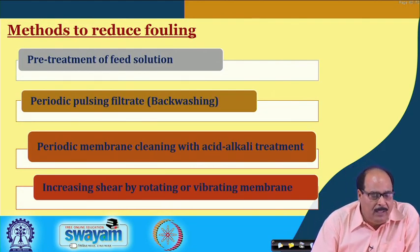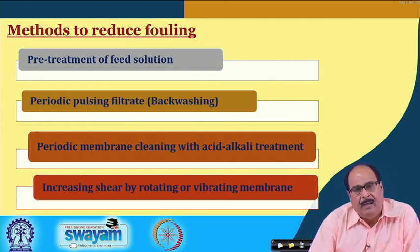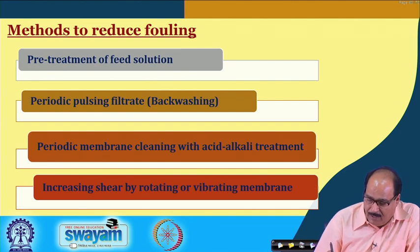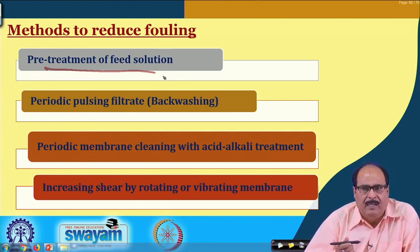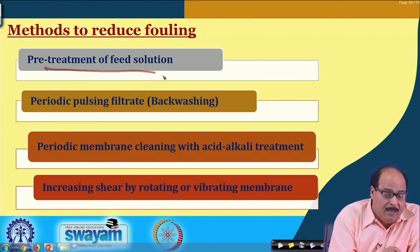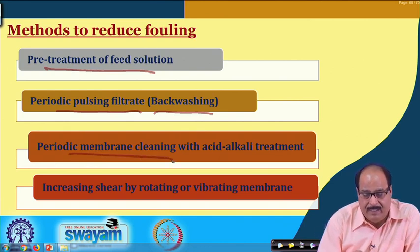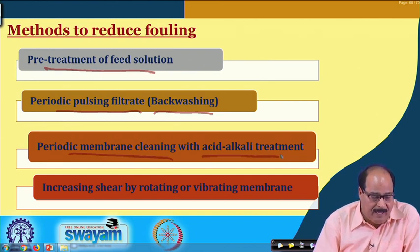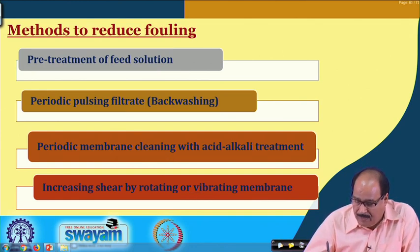Methods to reduce fouling: pretreatment of the feed solution is one important approach — suspended particles can be pre-filtered. Other methods include periodic pulsing of the filtrate through backwashing, periodic membrane cleaning with acid-alkali treatment, and increasing shear by rotating or vibrating the membrane. These are the ways to reduce the fouling problem in a membrane process.